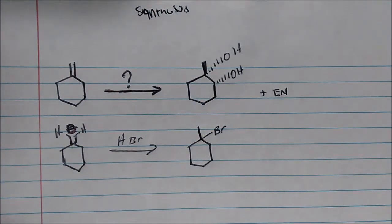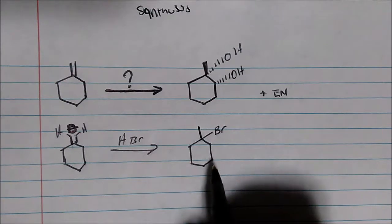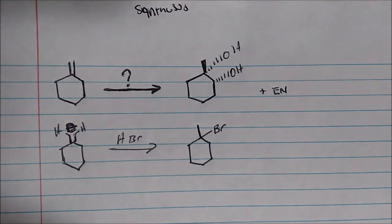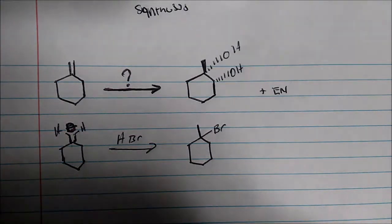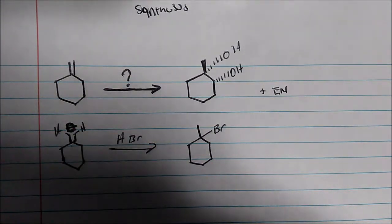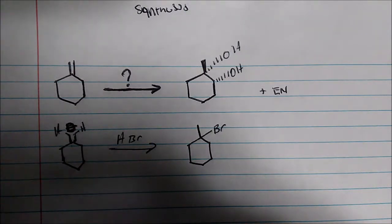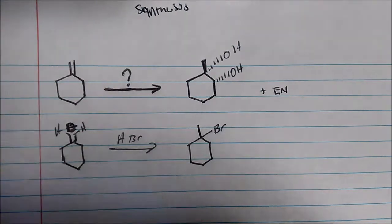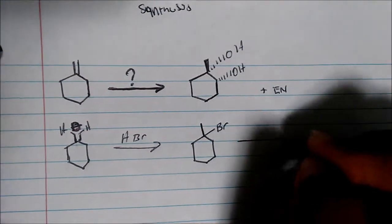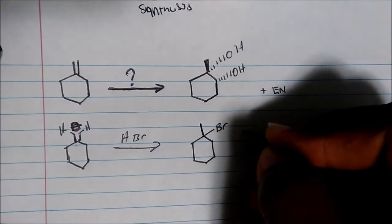Now when we talk about dihydroxylation or forming two diols, we know that we have to get to an alkene first because those are the reactions of alkenes. What if we add some sort of strong base?